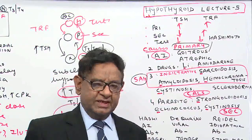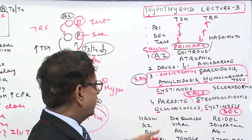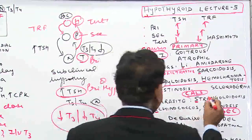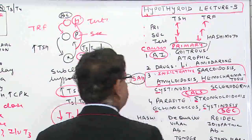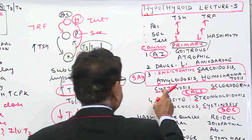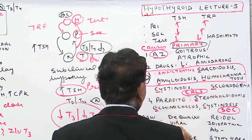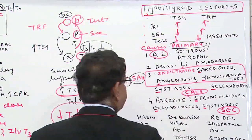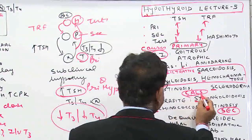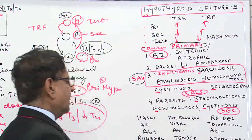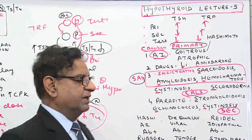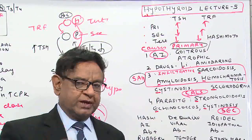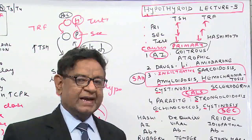Other infiltrative diseases causing hypothyroid are cystinosis and scleroderma. A mnemonic for four of these conditions is CALS: C for cystinosis, A for amiodarone, L for lithium, and S for scleroderma. There are also certain parasitic diseases which lead to hypothyroid by causing thyroiditis.